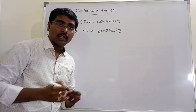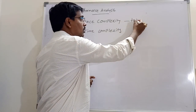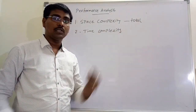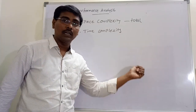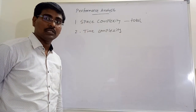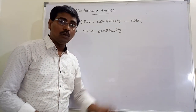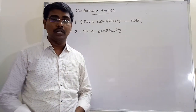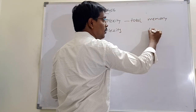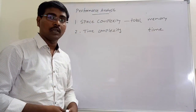Space complexity specifies the total amount of memory needed by the algorithm for completion of its task — that is, how much memory is required by the algorithm. Time complexity specifies the total amount of time needed by the algorithm for completion of the task.